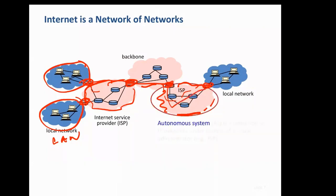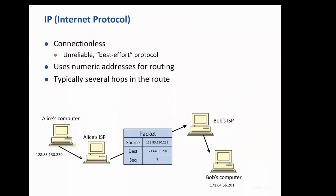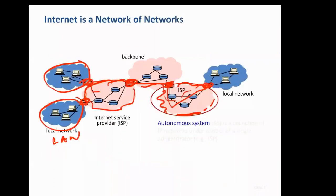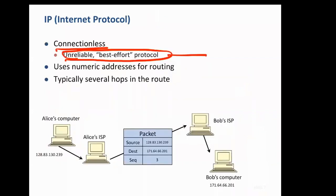IP is connectionless, unreliable, and a best-effort protocol. Unreliable means that IP simply says: if I am not able to deliver the packet, I will drop it — but I will make my best effort. There may be congested routers on the way whose buffers are full, and then packets will be dropped.